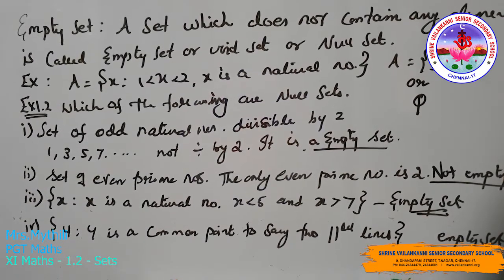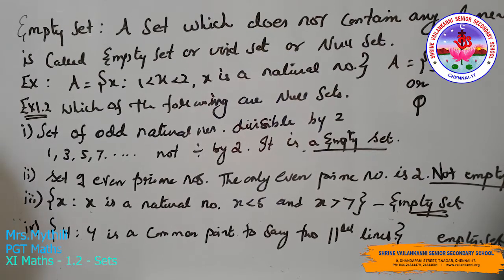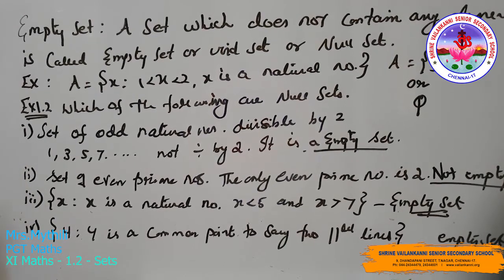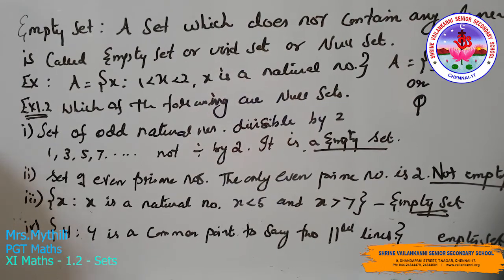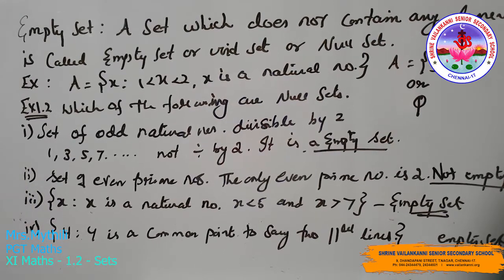Third: the set of all x such that x is a natural number, x less than 5 and x greater than 7. It is an empty set because there is no natural number which simultaneously satisfies x less than 5 and x greater than 7. Fourth: the set of all y such that y is a point common to any two parallel lines. There is no point common between two parallel lines, so it is also an empty set.